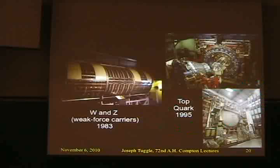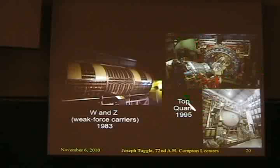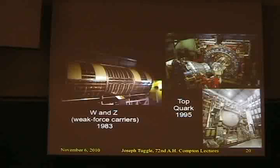The theory also gave the framework for saying we should expect the top quark, which was eventually discovered about 20 years after people predicted it might be there — at Fermilab with the CDF and D0 experiments. It's predicted particles, we've looked and found them, and we hope a similar thing happens with the Higgs boson. It's the last remaining particle that we haven't yet detected in the lab.